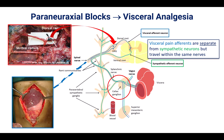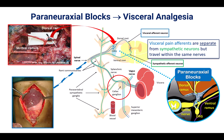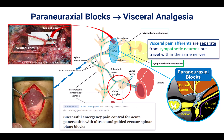Thus, in order to provide visceral analgesia, we need to perform a paraneuraxial block such as paravertebral blocks or an intertransverse process plane block like the ESP or ITP block. This produces local anesthetic spread to the dorsal root ganglion and thus both visceral and somatic analgesia. More peripheral blocks distal to the dorsal root ganglion will provide only somatic analgesia.